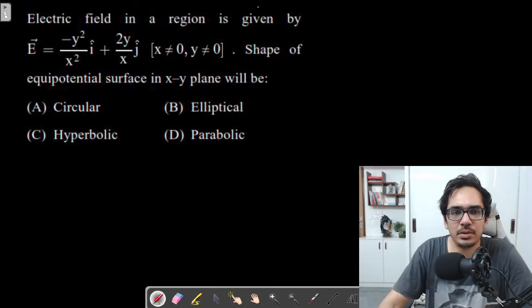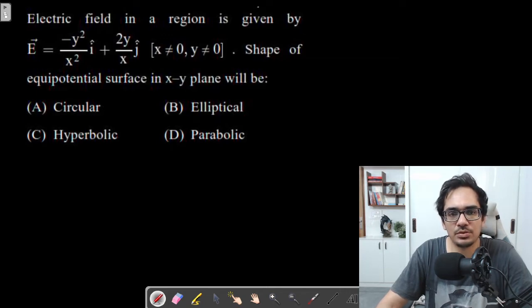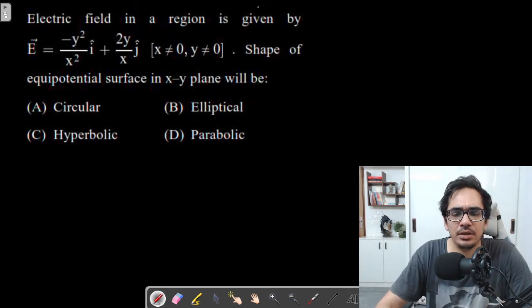Electric field in a region is given by E vector equals minus y squared by x squared i cap plus 2y by x j cap. This is a variable electric field. The shape of the equipotential surface in xy plane will be...